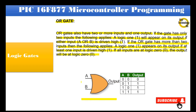OR gate symbol and truth table: It has two inputs and one output. If both inputs A and B are logic 0, then the output is logic 0. If input A is logic 0 and input B is logic 1, then the output is 1. If input A is logic 1 and input B is logic 0, then the output is 1. If both inputs A and B are logic 1, then the output is logic 1.